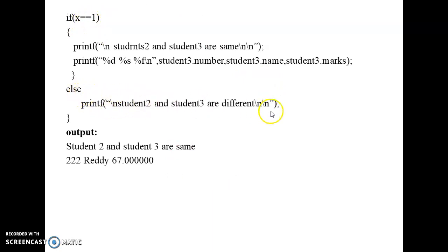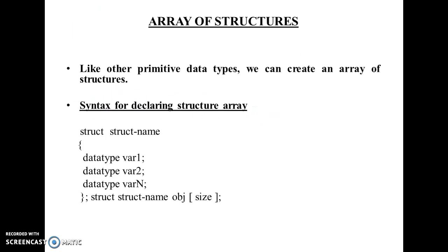Next, let's look at array of structures. C allows creating an array of variables of a structure type. Array of structure is used to store a large number of similar records — for example, storing records of 100 employees. The syntax is: the 'struct' keyword followed by the structure name, then the members with their respective data types, and valid identifiers for variable names.